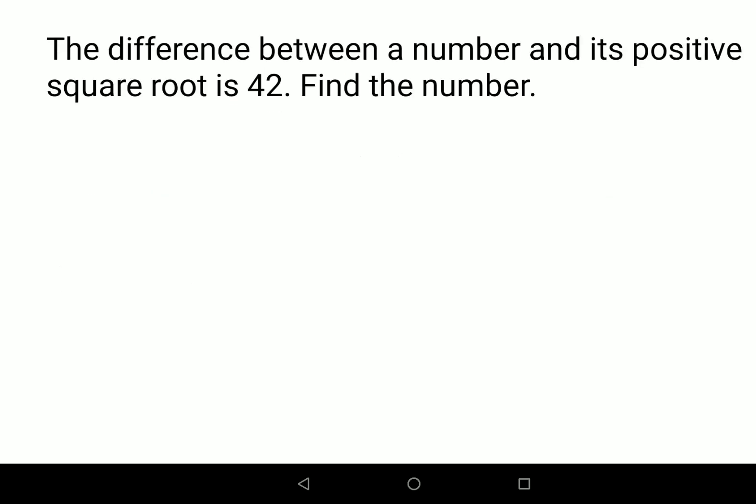We'll take the number to be x, and since there is a difference, we'll put a minus sign and its positive square root. So we'll write x - √x = 42.